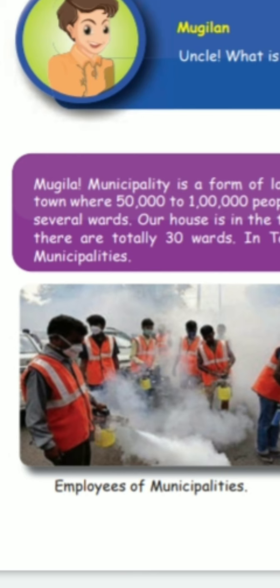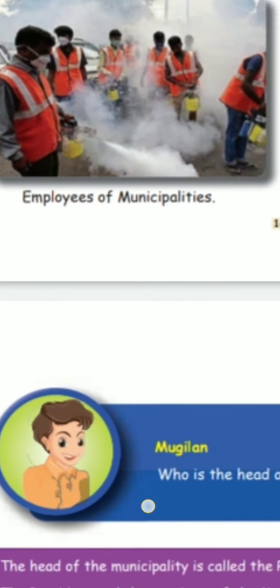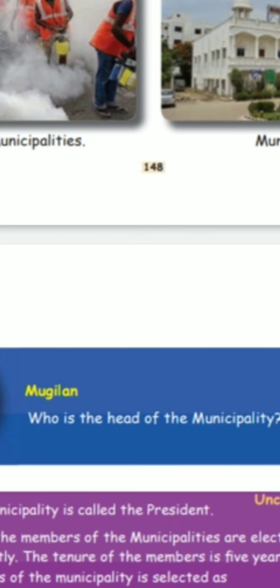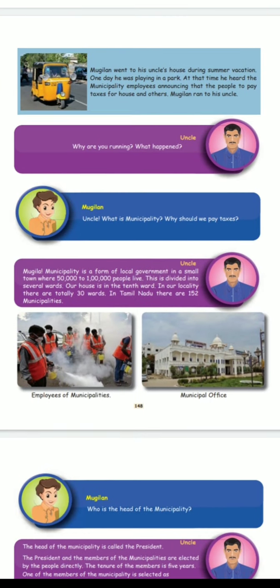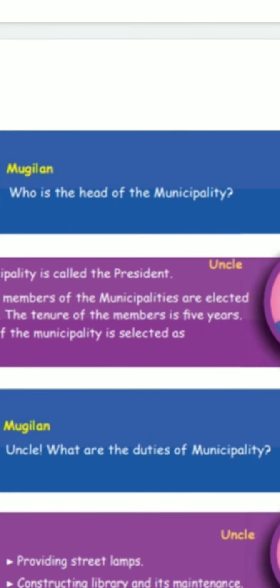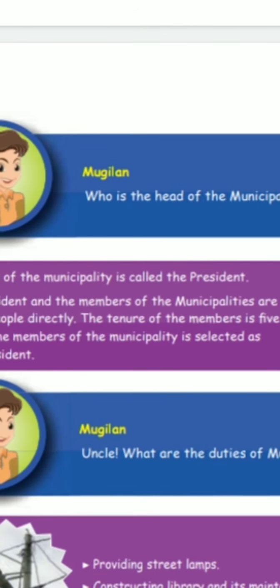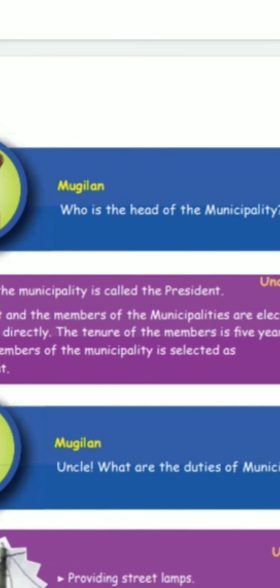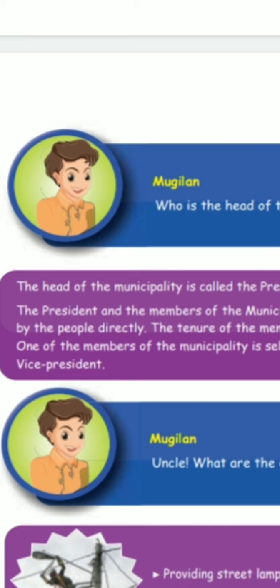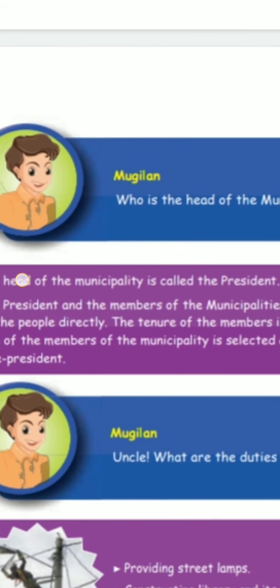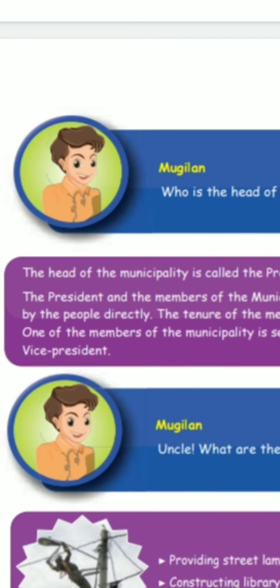The uncle explained the duties and who is the head of the municipality. Mugilan asked: 'Uncle, who is the head of the municipality?' His uncle explained: 'The head of the municipality is called the President. The President and the members of the municipality are elected directly by the people through voting. One of the members is selected as Vice President — like a leader and assistant leader in our class.'